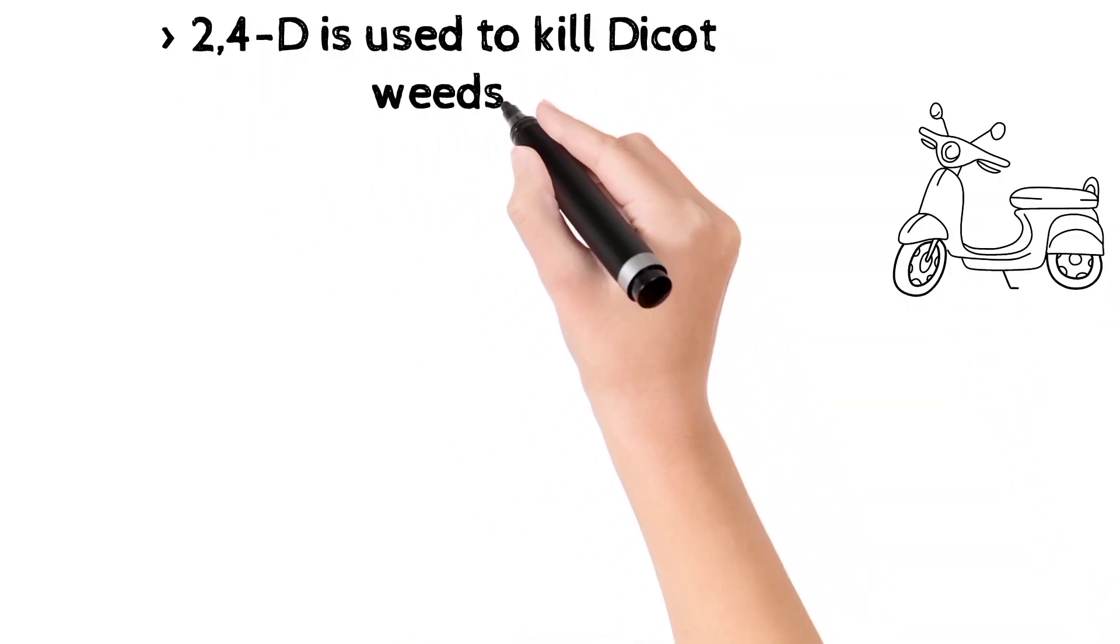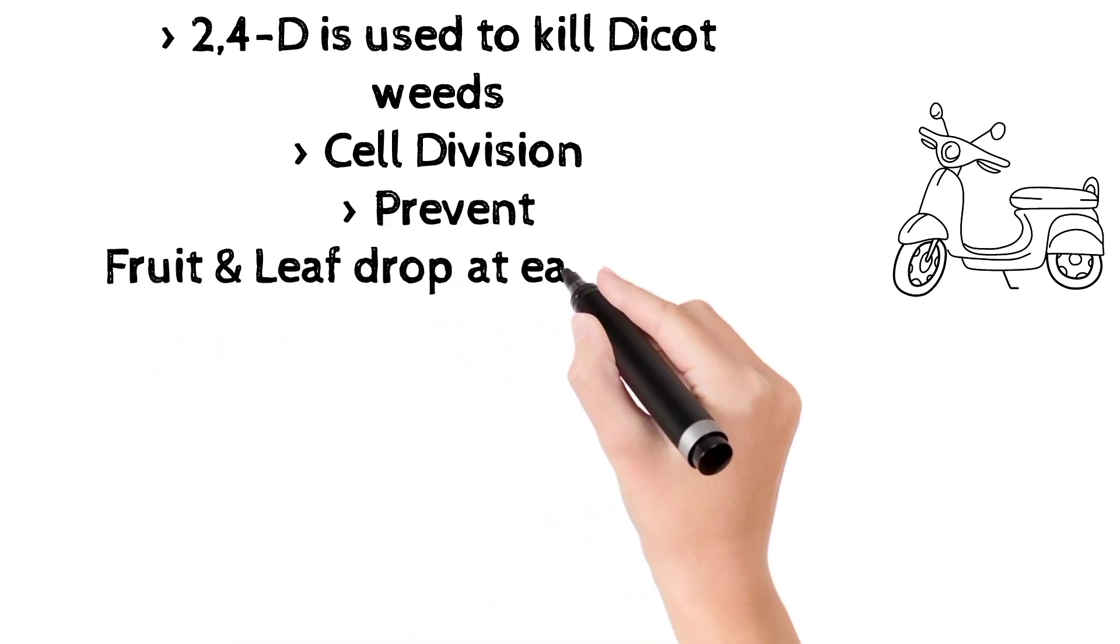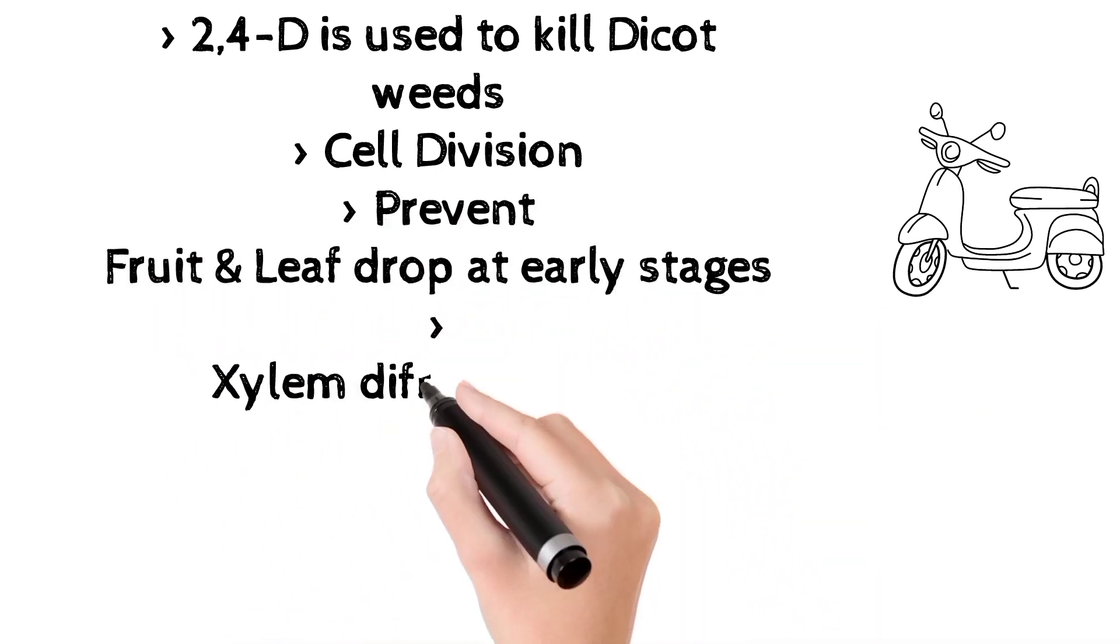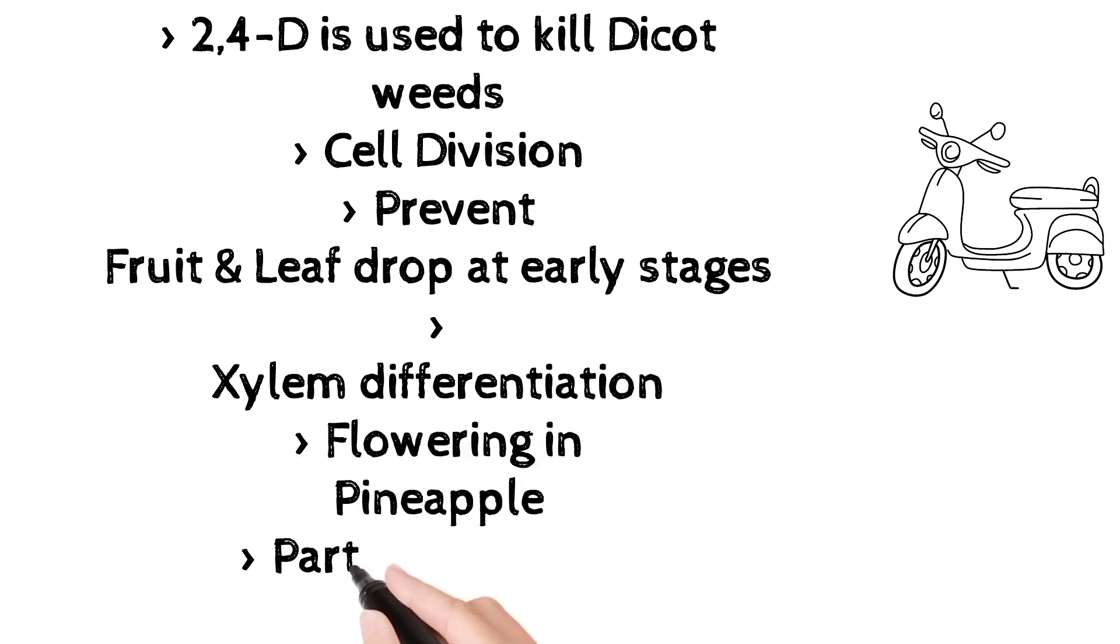Some other important functions of auxins include: 2,4-D is used to kill dicotyledon weeds. Auxin is involved in cell division. Prevents fruit and leaf drop at early stages. Auxin is involved in xylem differentiation, flowering in pineapple, and initiates parthenocarpy in tomatoes.